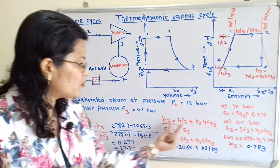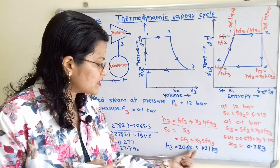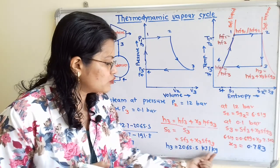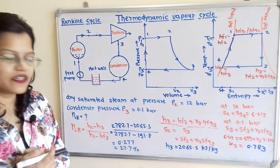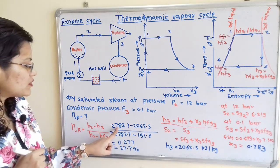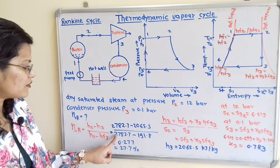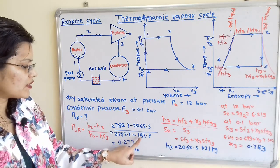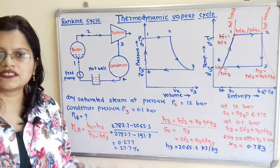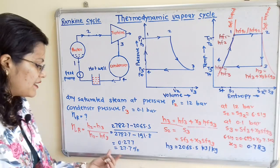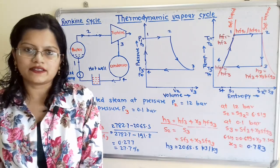Substituting X3 equals 0.783 into H3 equals HF3 plus X3 × HFG3 gives H3 equals 2065.5 kJ/kg. Rankine efficiency equals (2782.7 minus 2065.5) divided by (2782.7 minus 191.8), which equals 0.277, or 27.7 percent. This is the answer.